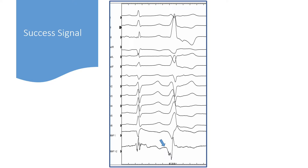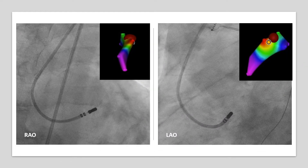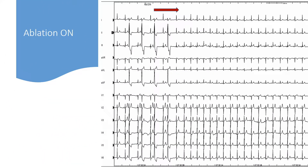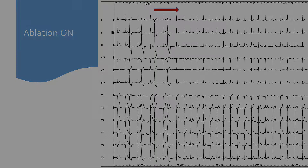Here we find this signal at the successful ablation site, which was almost 40 milliseconds earlier than the beginning of the QRS complex. This figure shows RAO and LAO projections in fluoroscopy images and targeted 3D mapping in the left coronary cusp. We saw the successful ablation signal with a small cusp potential, and here is the ablation effect. It's very important to have and search for this cusp potential during ablation of the PVC in the cusp.